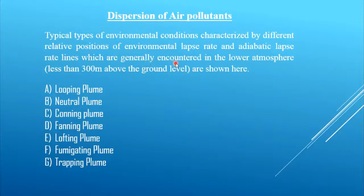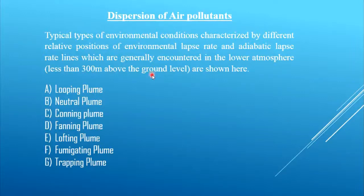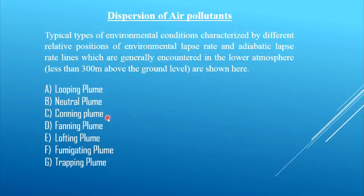Typical types of environmental conditions characterized by different relative positions of ELR and ALR lines are shown here. This phenomenon generally occurs in the lower atmosphere, generally less than 300 meters above ground level. Depending on the position of the ELR line and ALR line, plume patterns can be divided into seven types: looping plume, neutral plume, coning plume, fanning plume, lofting plume, fumigating plume, and trapping plume.